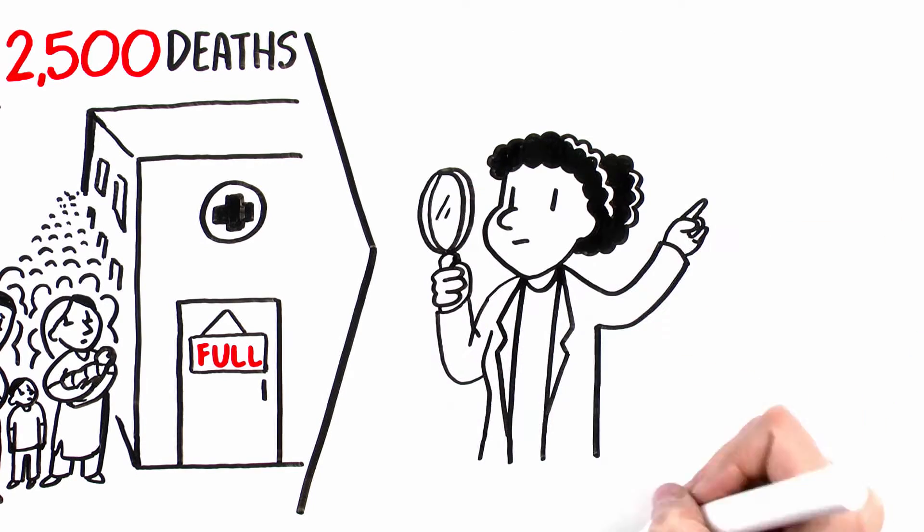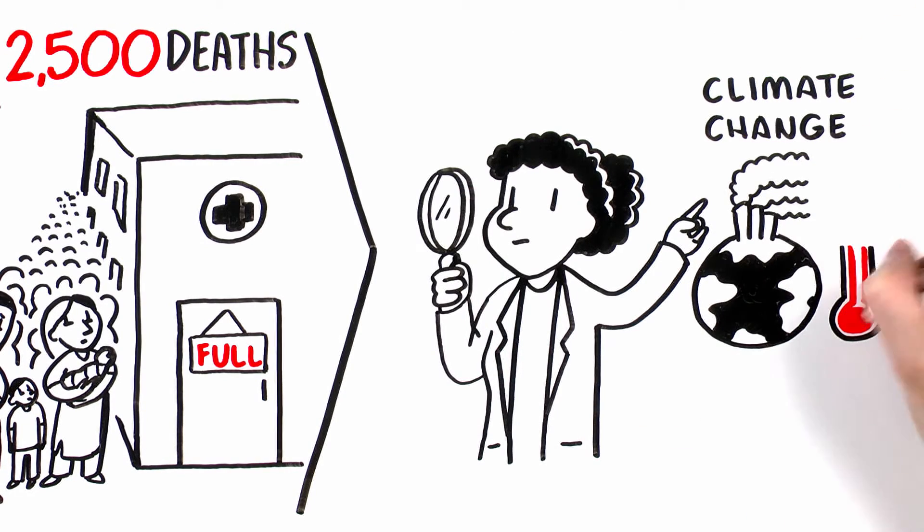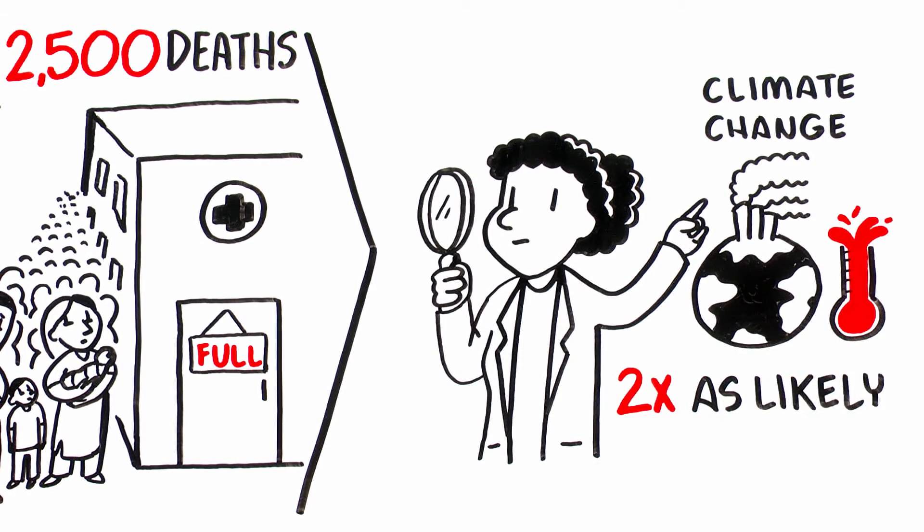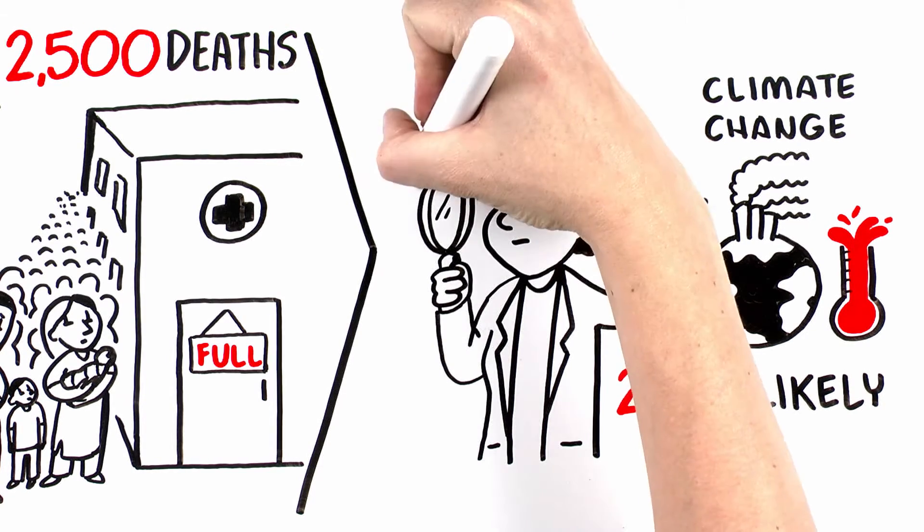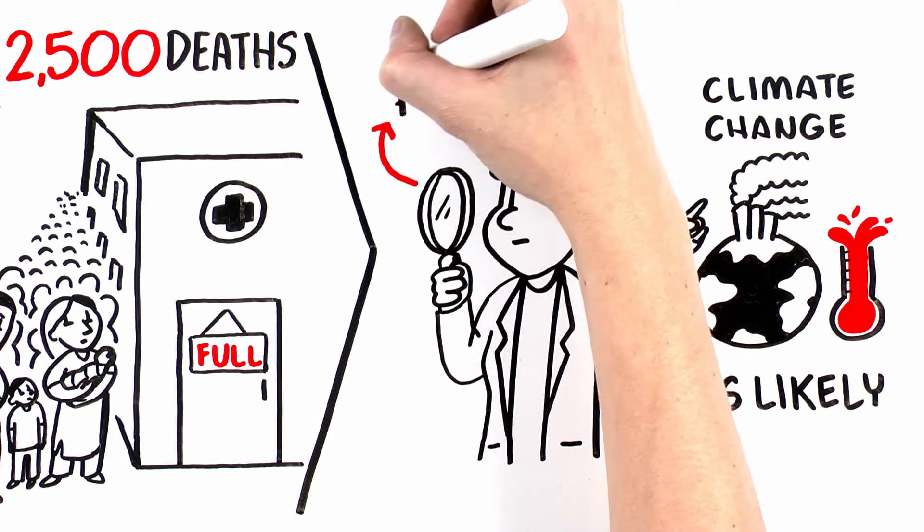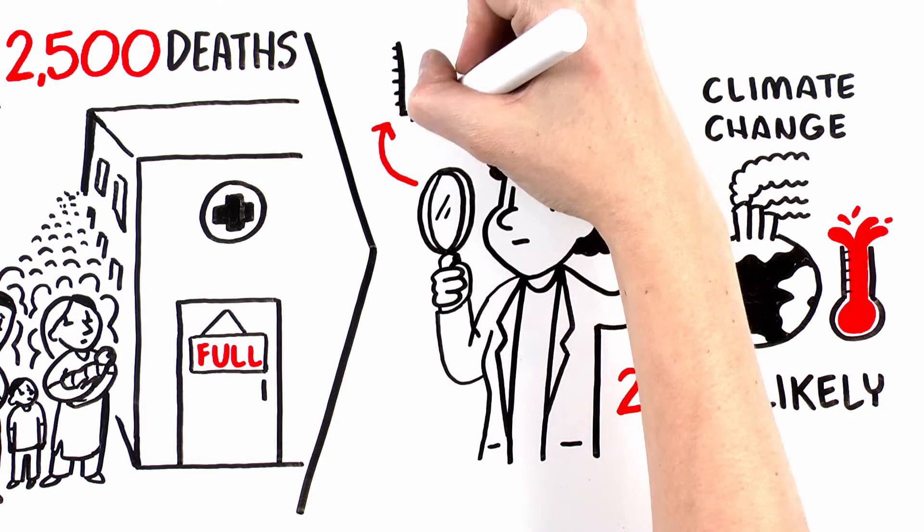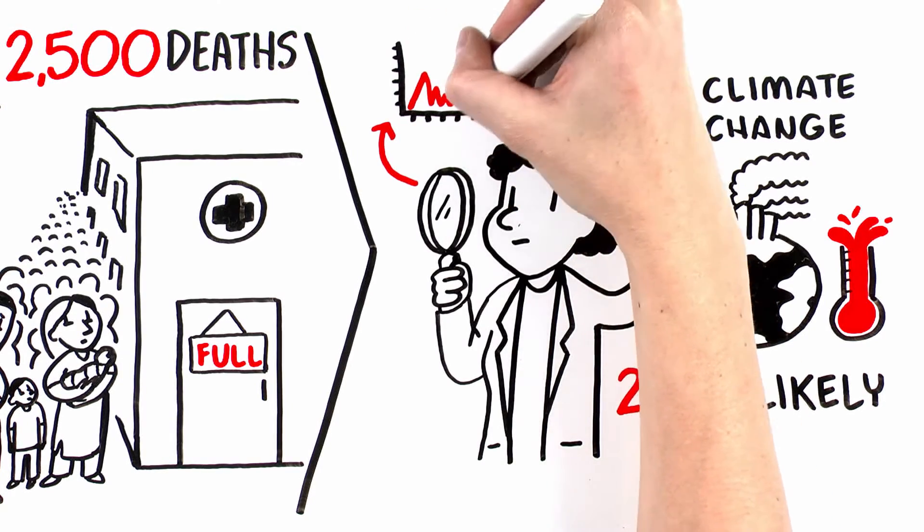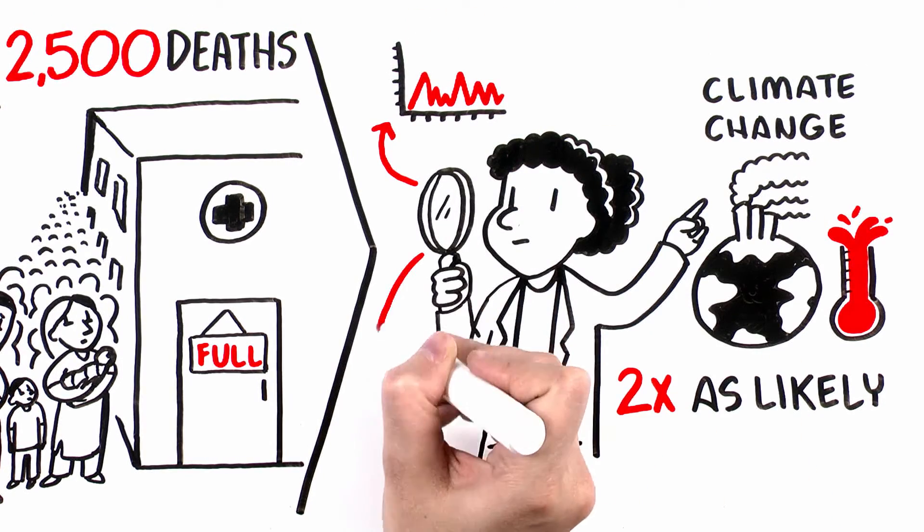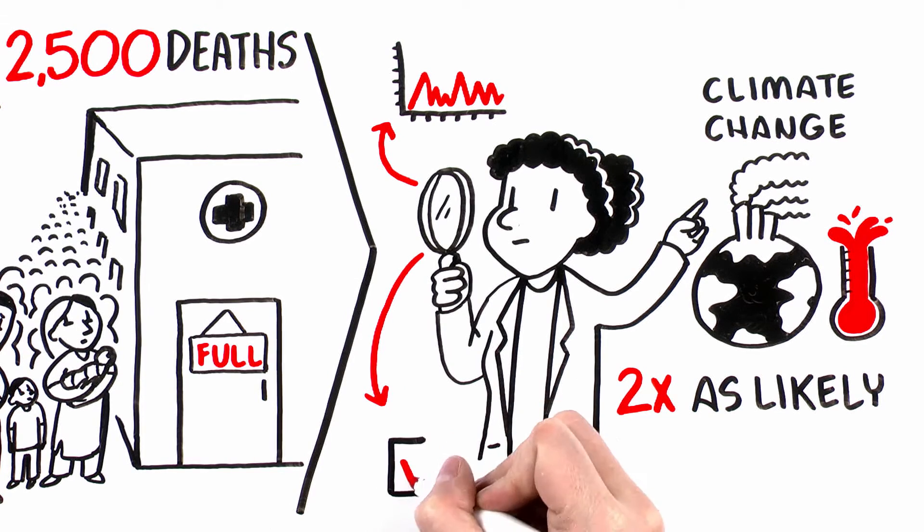Scientists found that climate change made the deadly heat wave twice as likely to happen. This gives us scientific evidence, not simply a guess, at the risk of similar heat waves occurring in this part of India in the future. That knowledge opens up opportunities for preparedness.